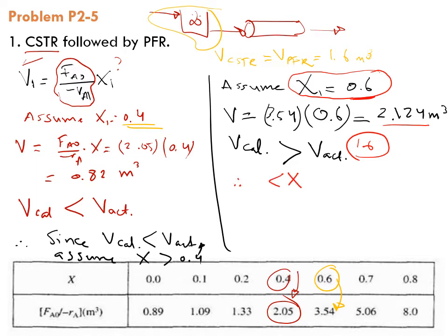That means conversion must be greater than 0.4 and less than 0.6. What would be your next guess? Well, my guess should be somewhere in between—it could be 0.42, 0.45, 0.5, 0.51, 0.52, so you have endless options.